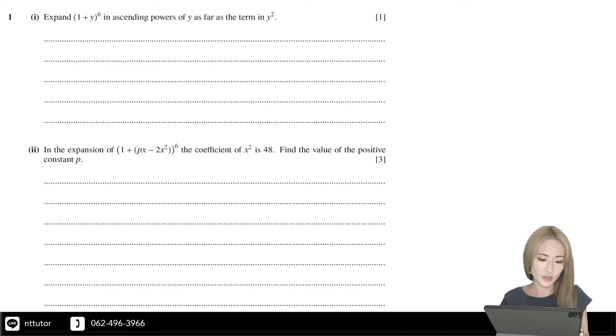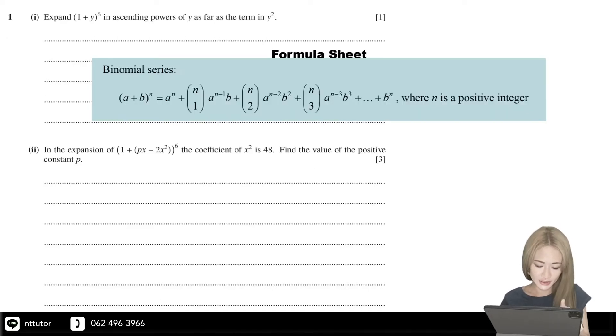In order to do that, we have a formula in your formula sheet for the binomial series. We're going to use that one, where in this case a equals 1, b equals y, and n equals 6.